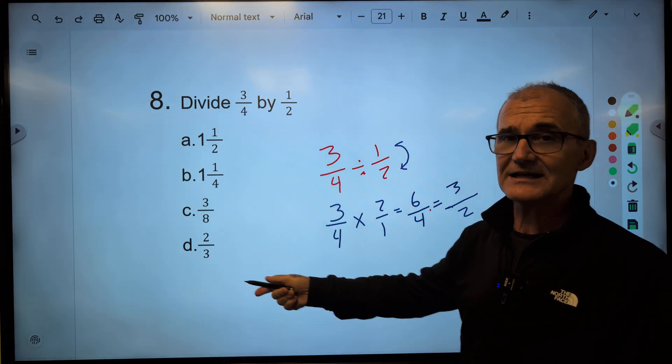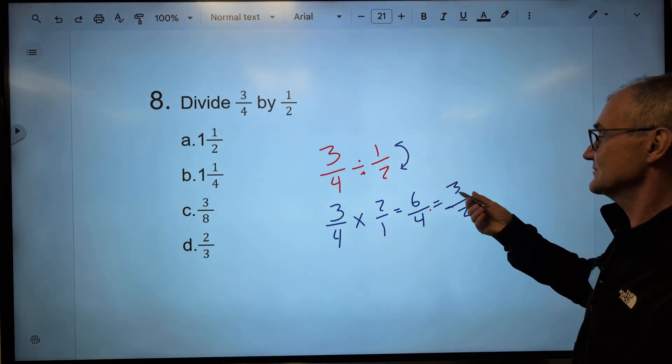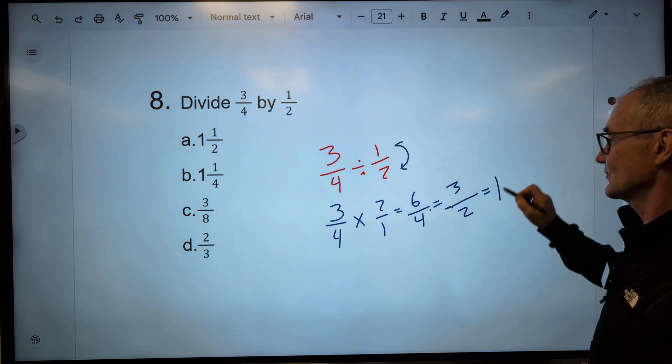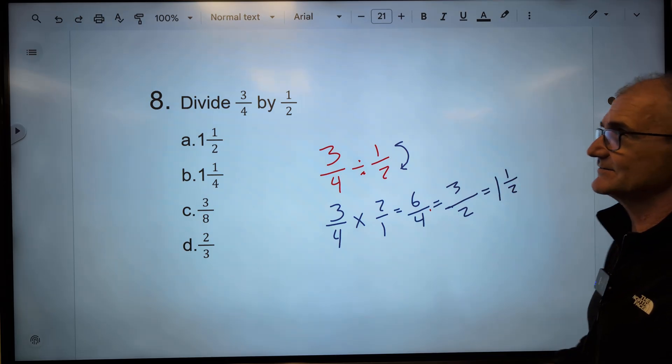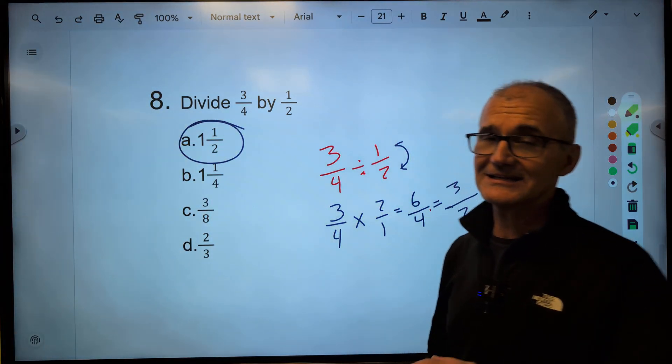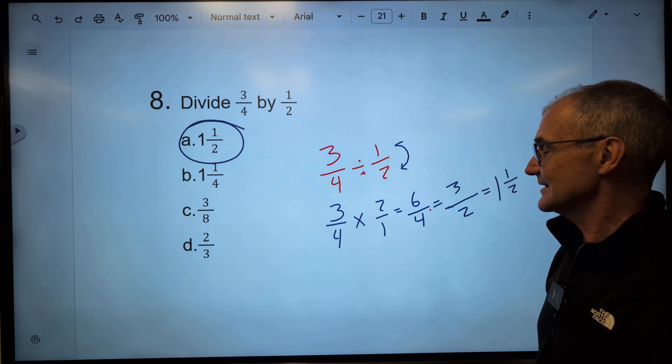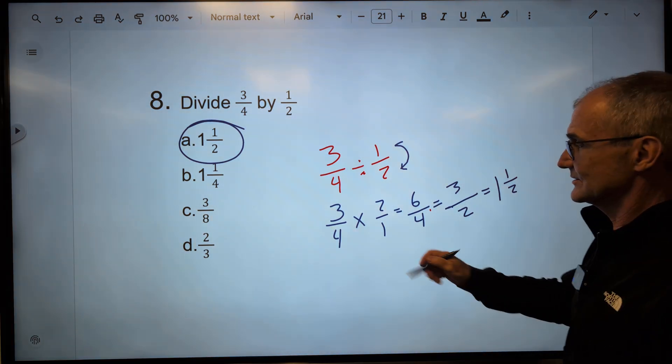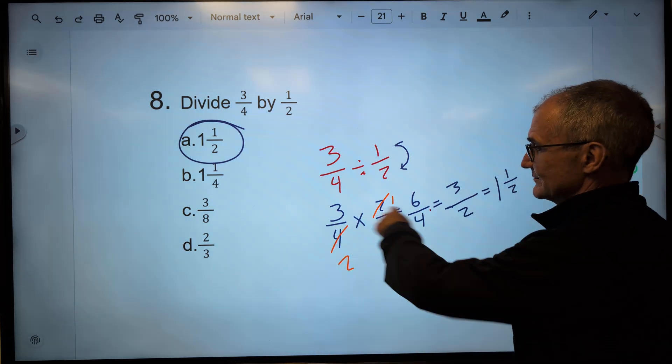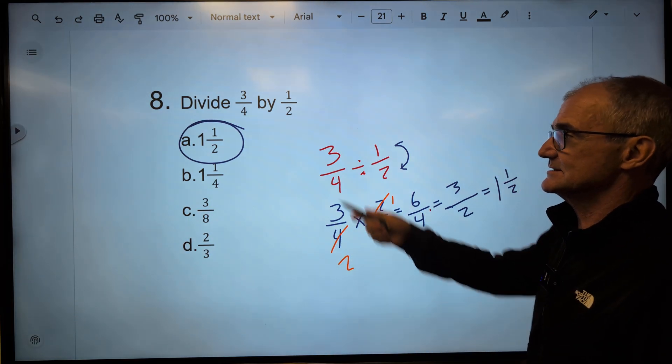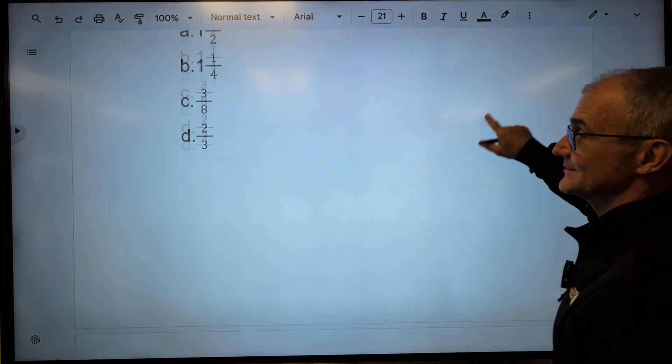I reduce it to go in here 3 times, into here twice to get 3/2. I look over at my answers. It's not there. So I have to convert this to a mixed number. 2 goes into 3 one time with 1 left over. So 3/2 and 1 and a half are the same. Correct answer, answer A. That's a tricky one. Fractions are tricky. The other way I could have done that is I could have said, well, 2 goes into here once, 2 goes into here twice, giving me 3 over 2. 3 over 2 is the same as 1 and a half. All right, problem number 8. Keeping track of that. Hopefully, you're getting 8 out of 8 so far.